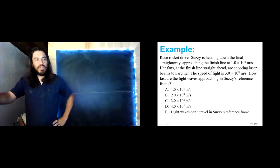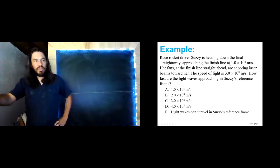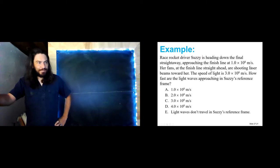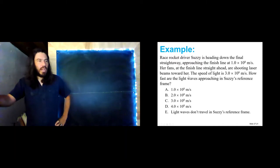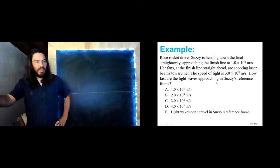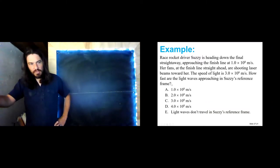Race rocket driver Susie is headed down the final straightaway, approaching the finish line at 1.8 meters per second. Her fans at the finish line straight ahead are shooting laser beams towards her. The speed of light is 3×10⁸ meters per second. How fast are the light waves approaching in Susie's reference frame?